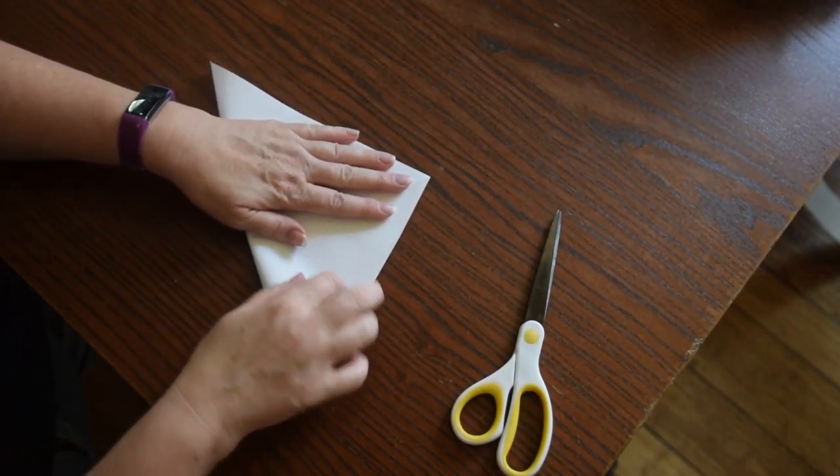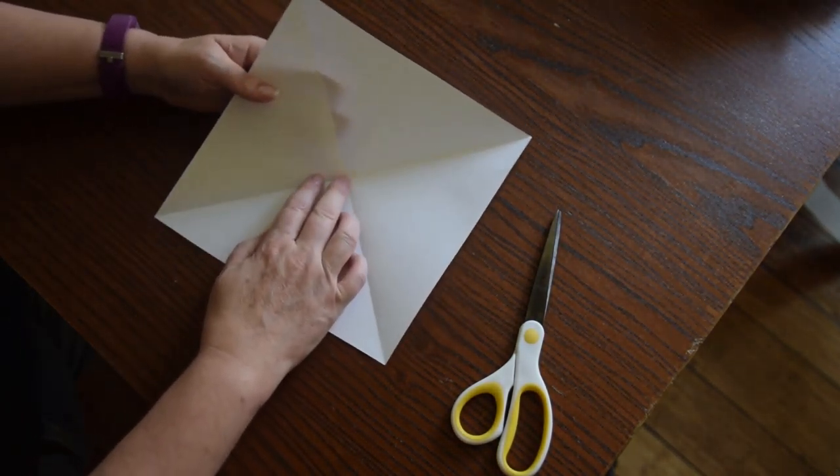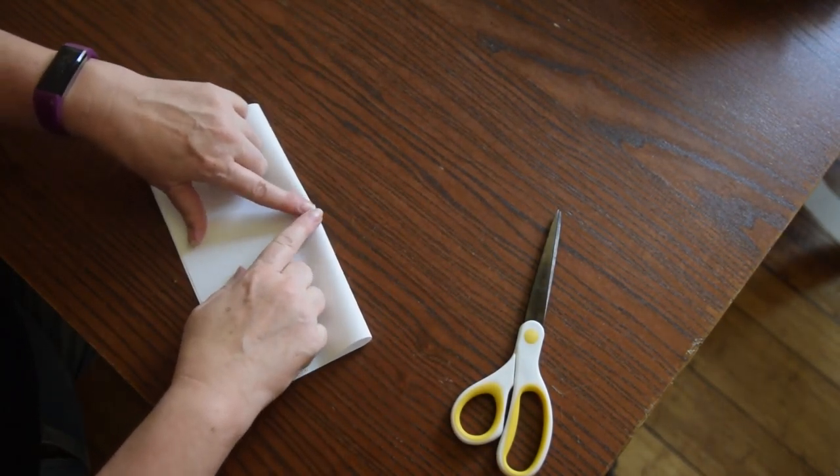Now, we are going to fold each corner to a crease. And then we're going to fold it in half both ways.